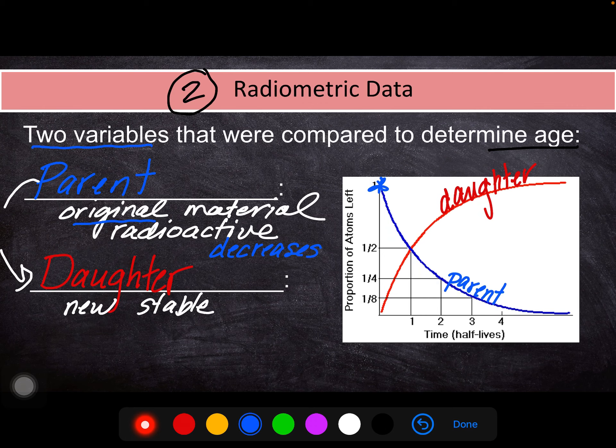Because as that parent material decreases, like we said, it's converting into the daughter material, which increases over time. So the levels essentially flip-flop over time.